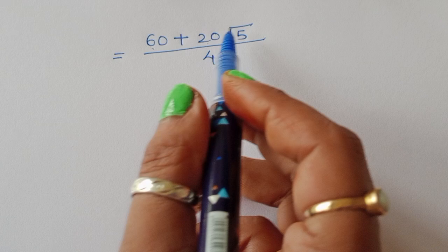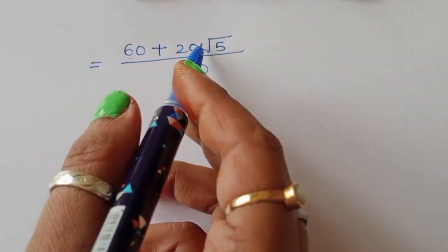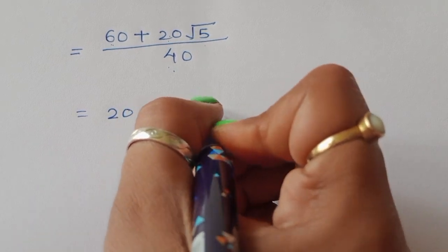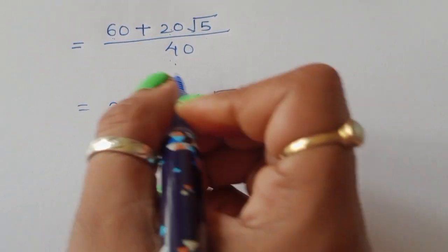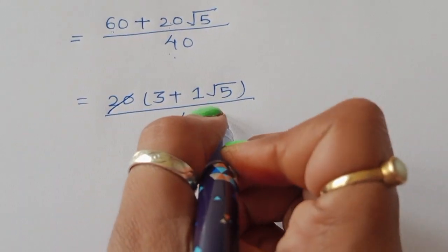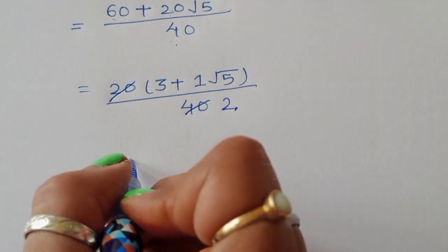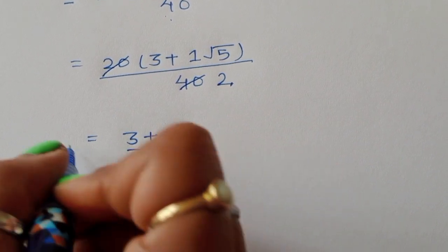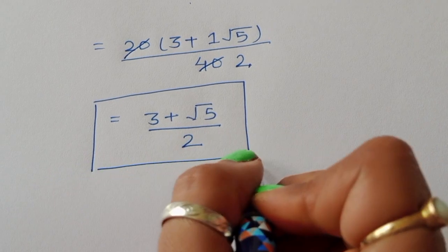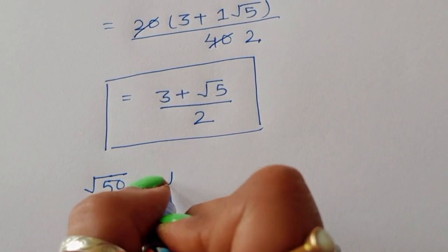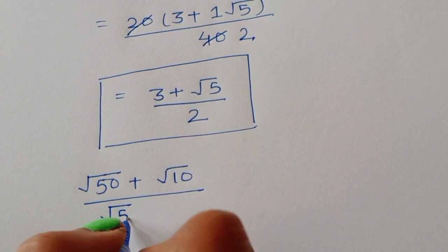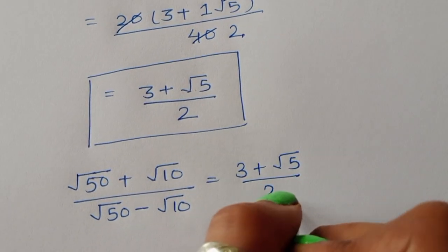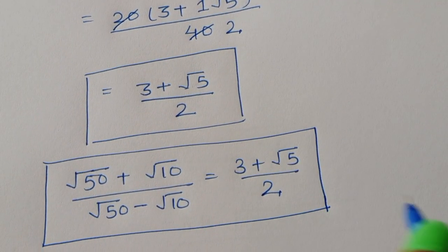So the expression becomes 60 plus 20 times square root of 5, divided by 40. Taking 20 as a common factor: 20 times 3 is 60 and 20 times square root of 5 remains, giving 20 times (3 plus square root of 5) divided by 40. Cancelling 20, we get 3 plus square root of 5 divided by 2. So the value of square root of 50 plus square root of 10, divided by square root of 50 minus square root of 10, equals 3 plus square root of 5 divided by 2. This is the first method.